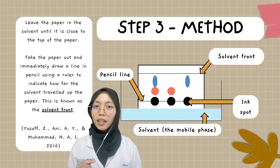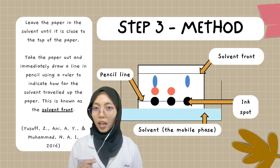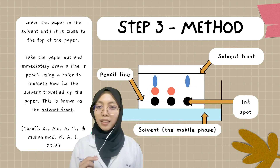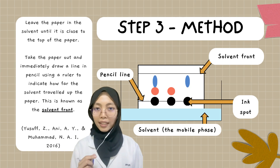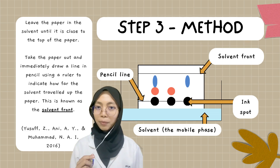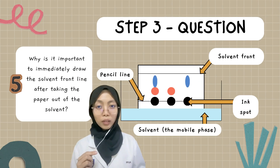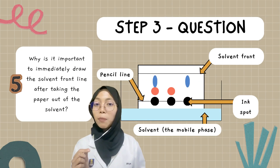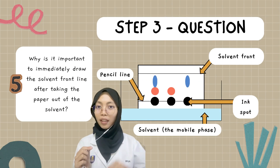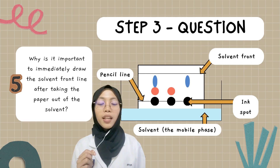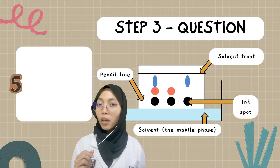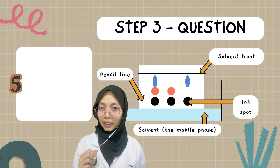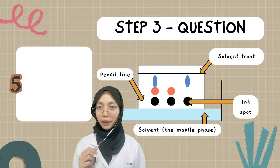Step three: leave the paper in the solvent until the liquid almost reaches the top. Then take it out and draw a pencil line to mark how far the solvent moved — this is called the solvent front. It is important to draw the solvent front line immediately after taking out the paper because the solvent may evaporate quickly, making it hard to see how far the solvent traveled up the paper.